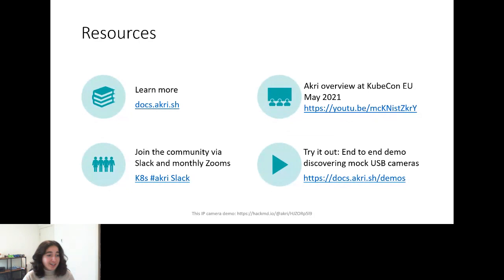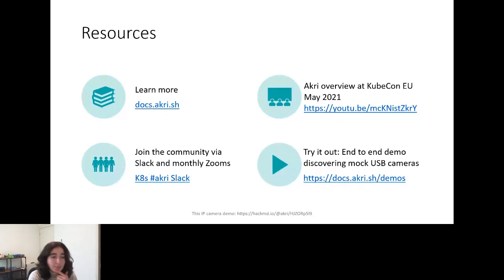Thank you for the clarification on BACnet — building automation control net. I would love to look into that a little bit more. We had a comment about Akri being kind of like service discovery with Kubernetes — I think that is a fair summary of what Akri is. Regarding using Akri with Azure Digital Twin: we've had an issue up on Akri about that, and there is definitely some power there, but we have not taken steps towards that currently.